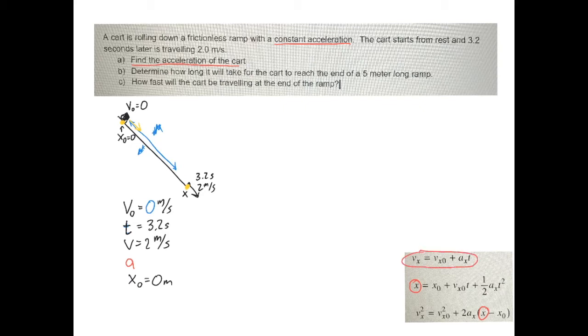And lo and behold, that is going to be one that I have all the information for. I've got the final velocity is equal to the initial velocity plus the acceleration times the time. The final velocity was 2 meters per second. The initial velocity was 0 meters per second. The acceleration is what I'm looking for. And then the time is 3.2 seconds.